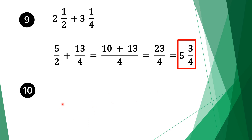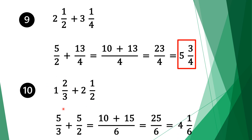Moving on to our last question. We have 1 and 2 thirds plus 2 and a half. Again we convert our mixed fractions to normal fractions. Multiply the denominator: 3 times 1 is 3, plus 2 is 5. Bring the denominator 3. Do the same for the second fraction: 2 times 2 is 4, plus 1 is 5. Bring the denominator 2. Now we have normal adding fractions and we don't have common denominators, so we multiply 3 times 2 to get 6.